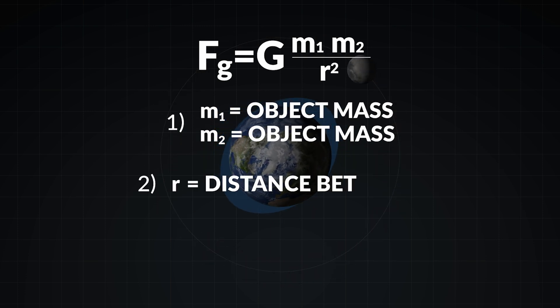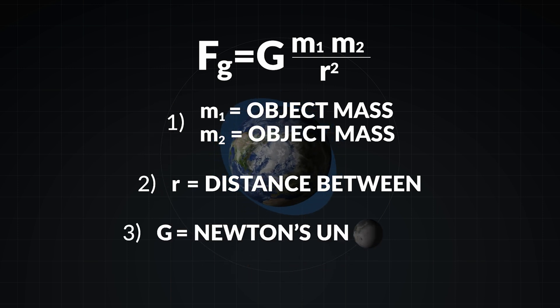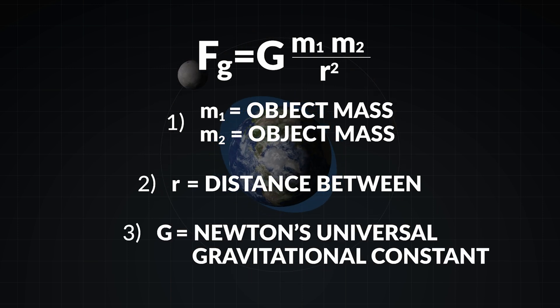Second, the distance between those masses, which addresses the existence of space itself. And third, Newton's universal gravitational constant, a fundamental physical constant that addresses the scale of this force.